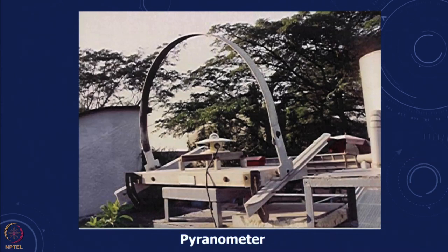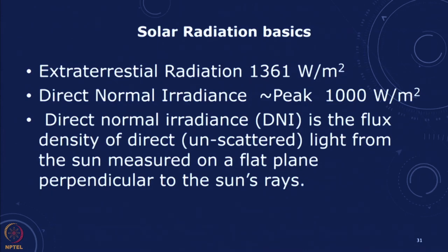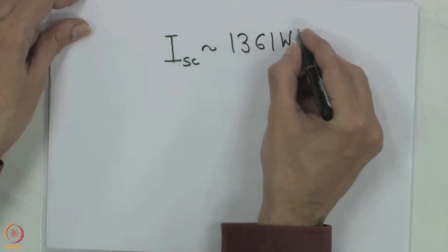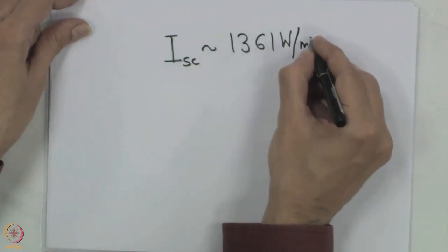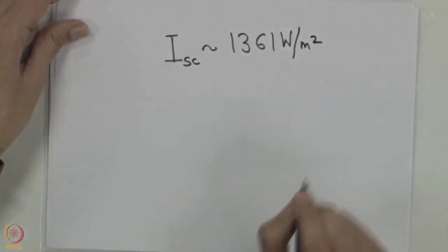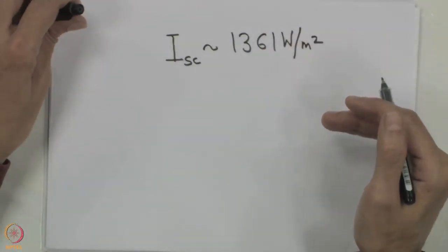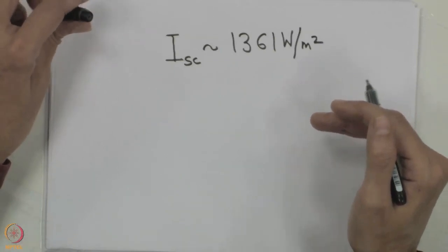Most of the measurement stations will have these types of instruments. The solar constant ISC, which is the incident solar radiation, is of the order of 1361 watts per meter squared. That is the total amount of solar insolation available per meter squared of surface.